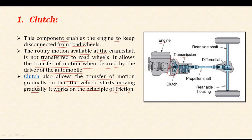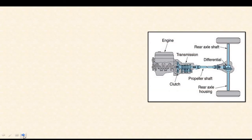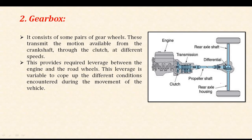There are different types of clutches which we will discuss one by one in coming lectures, including friction clutches. As we have discussed, motion from the engine and transmission system can be engaged or disengaged only with the help of the clutch. In the next slide, we will discuss the second component, that is the gearbox.